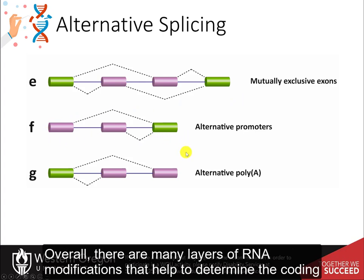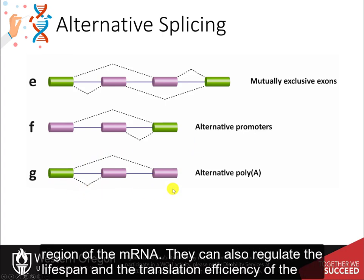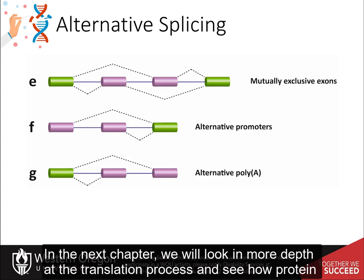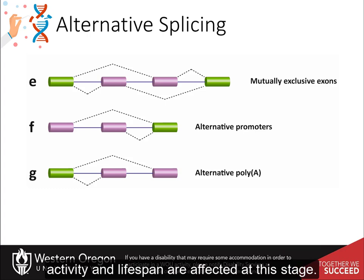Overall, there are many layers of RNA modifications that help to determine the coding region of the messenger RNA. They can also regulate the lifespan and the translation efficiency of the messenger RNA, helping to regulate and control protein levels within a cell. In the next chapter, we will look in more depth at the translation process and see how protein activity and lifespan are affected at this stage.